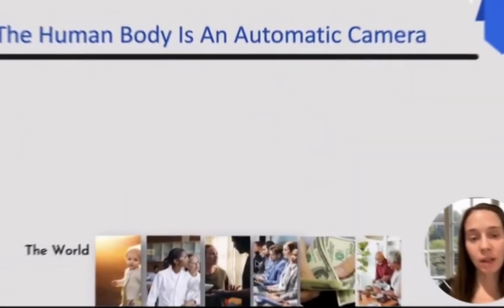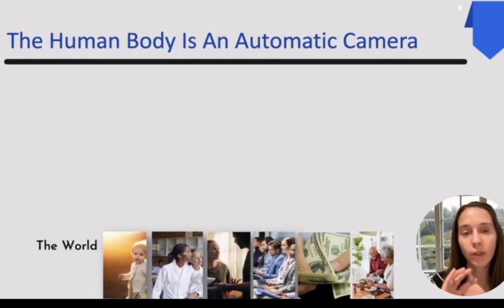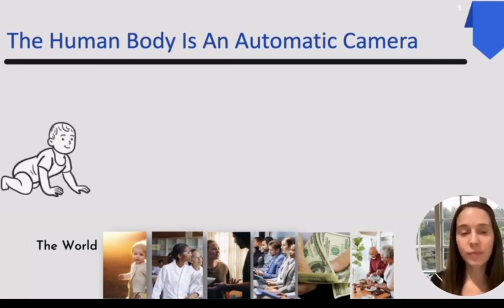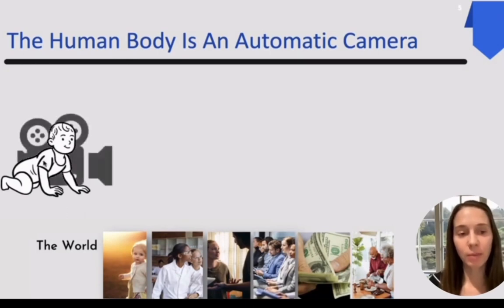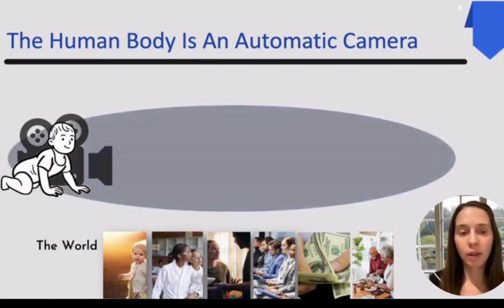The reason we are not one with that original nature all the time is because our human body is like an automatic camera. Since the time that we came into the world with this body, through the five senses - eyes, nose, mouth, ears, and even all the physical sensations of this body - are used just like an automatic camera machine to record everything of the world.